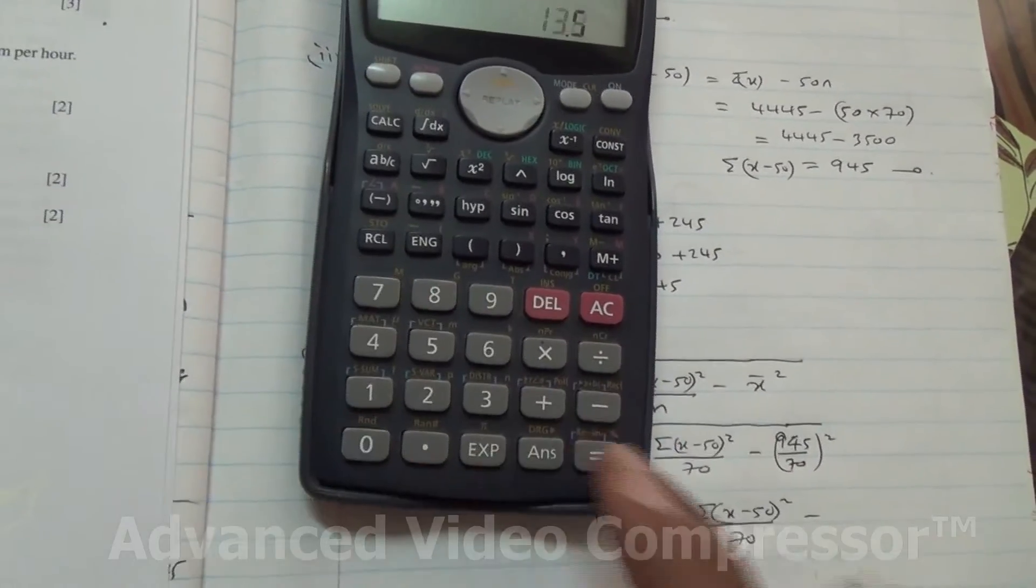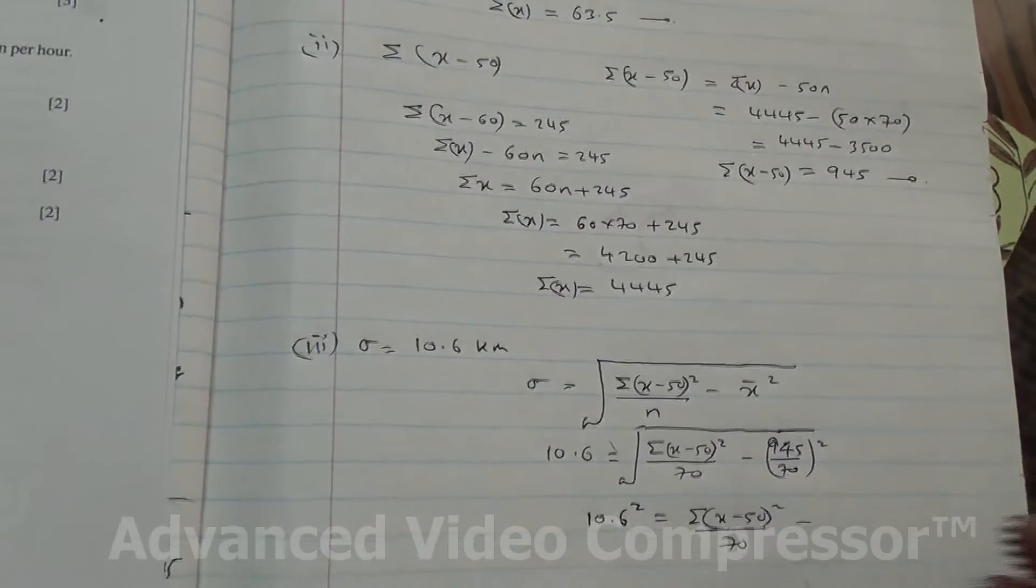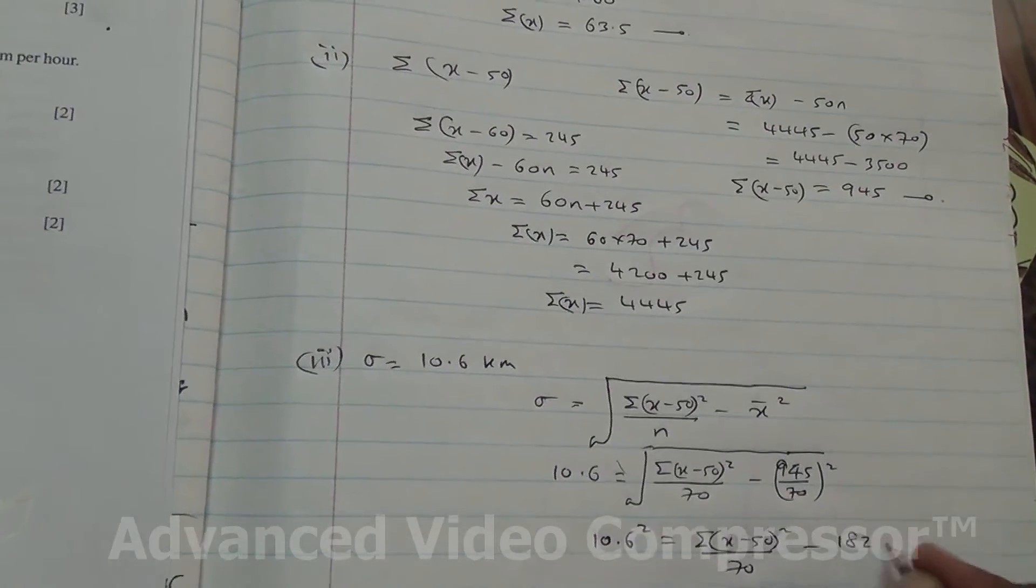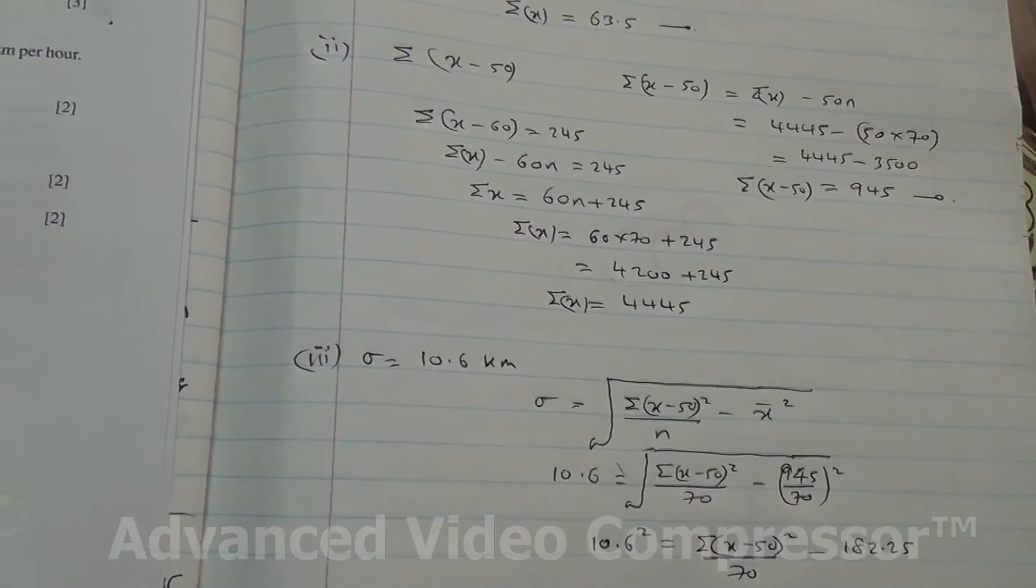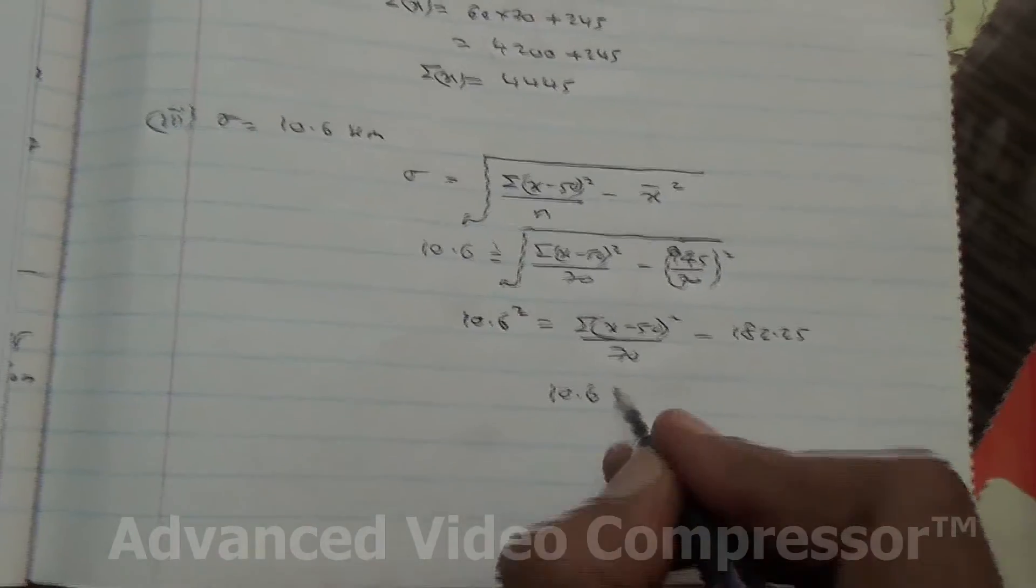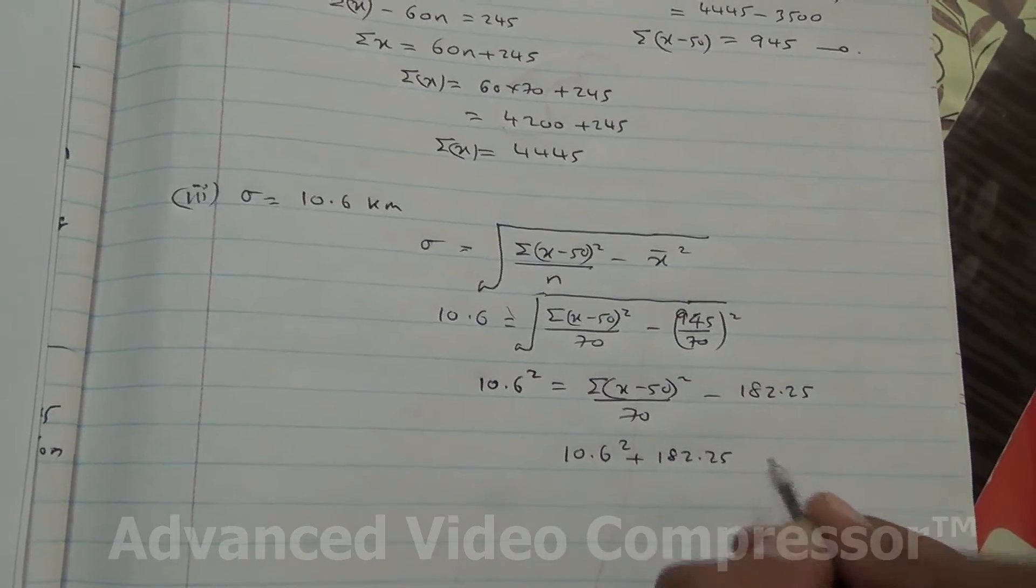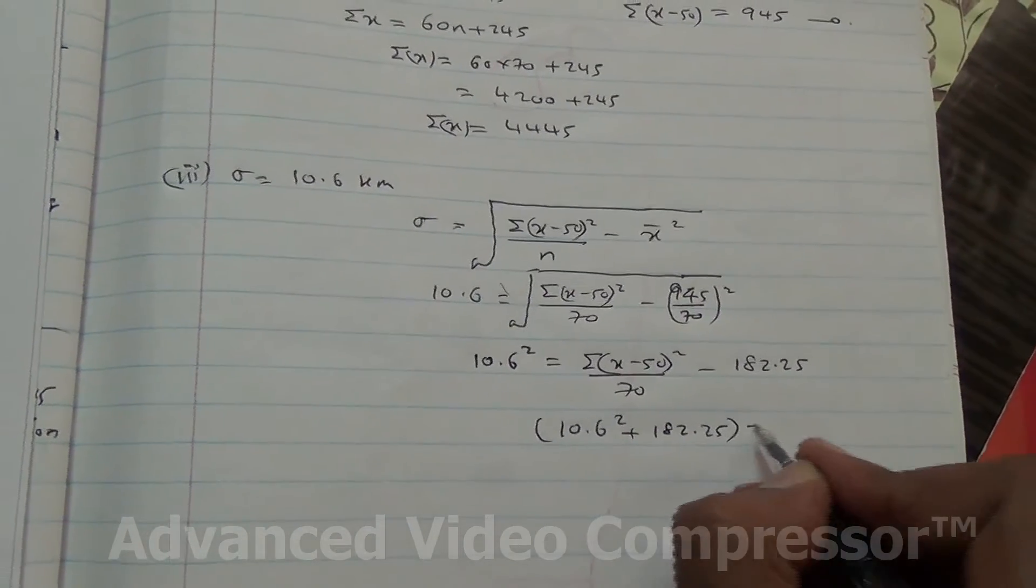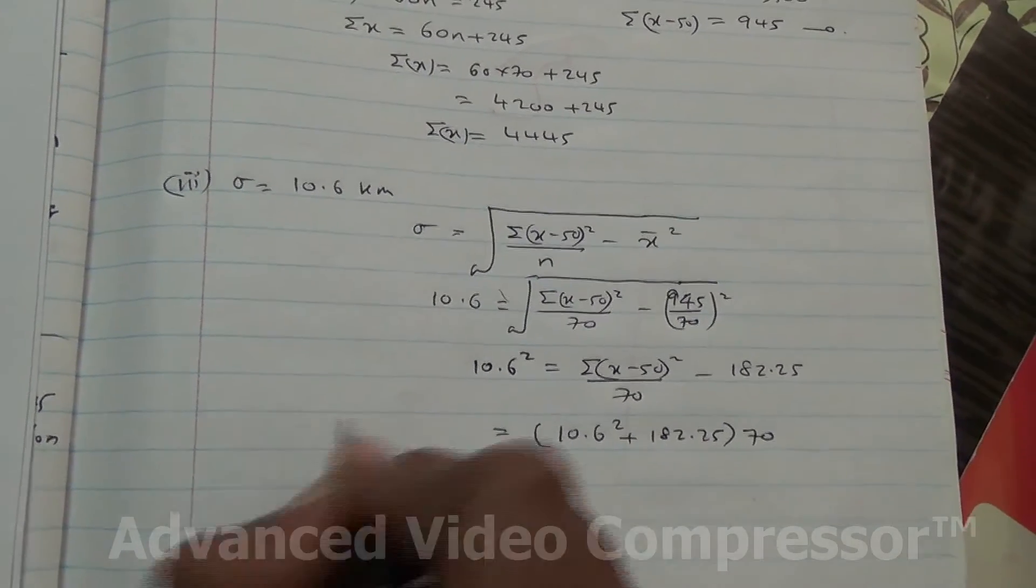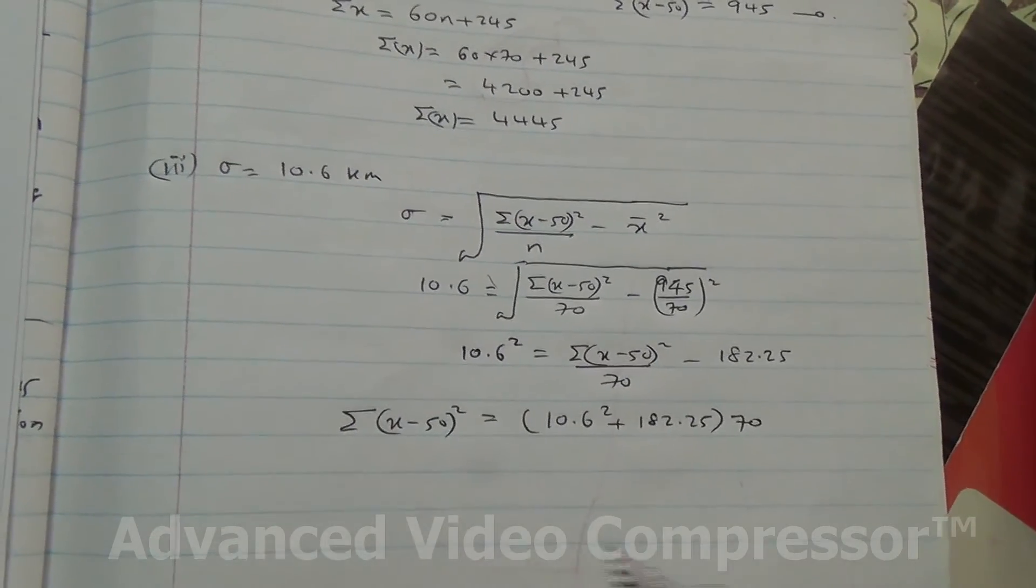Minus 945 over 70 squared. So 945 divided by 70, and you square that, is 182.25. Send this on this side, becomes 10.6 squared plus 182.25. And the 70, when you send it on this side, becomes multiplied, and you end up with the summation of x minus 50 squared, which is what is required.